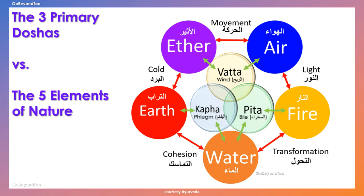When we combine the ether and air elements, we get movement, such as when you have air in empty space. When you combine air and fire, you get light. When you combine fire and water, you get transformation. When you combine water and earth, you get cohesion. And when you combine earth and ether, you get cold — cold space basically.